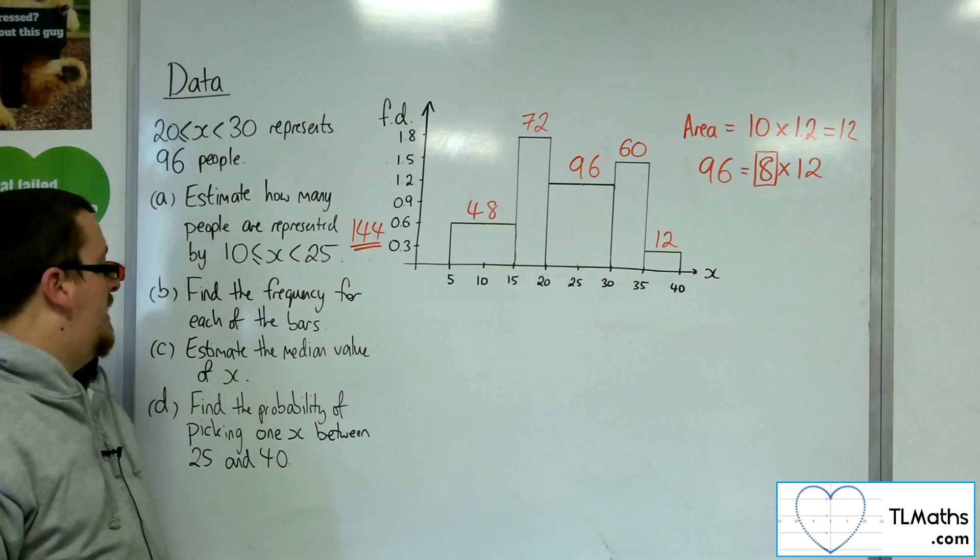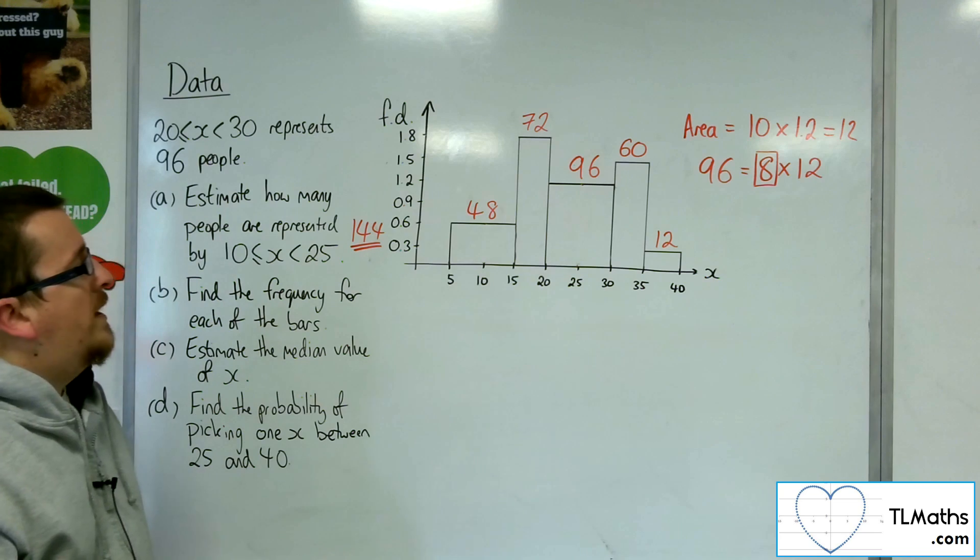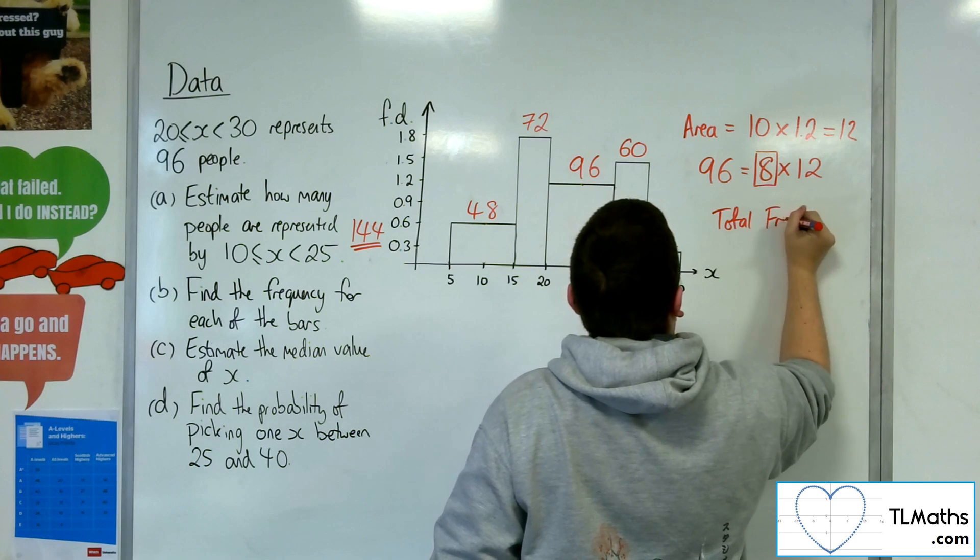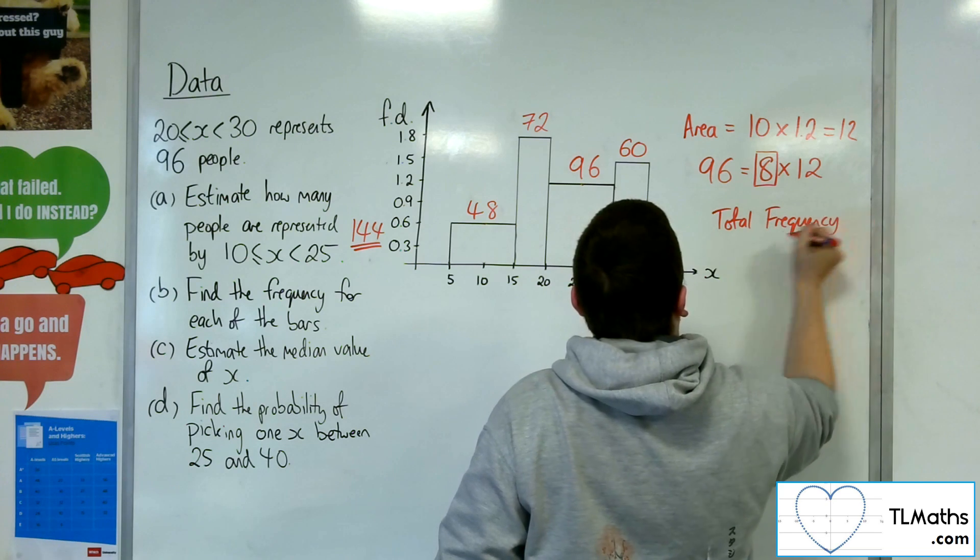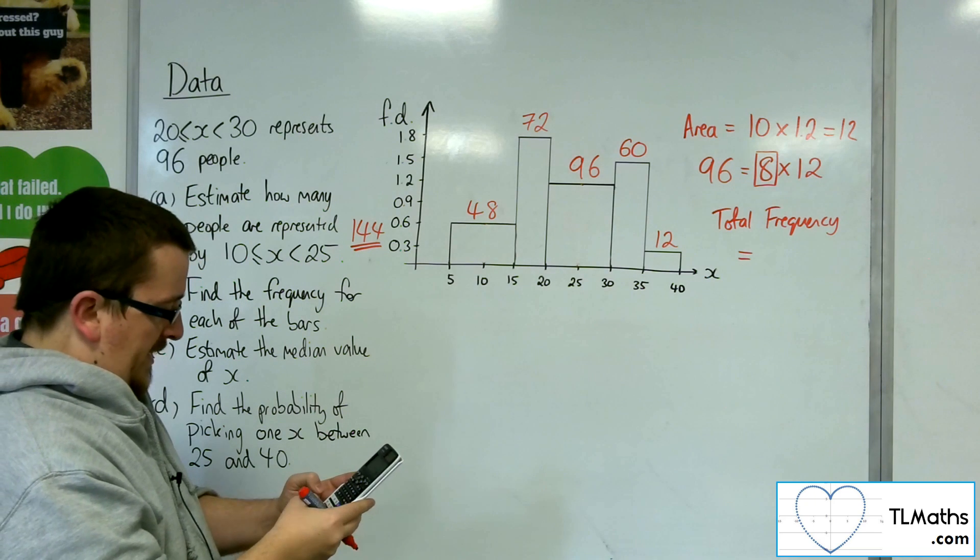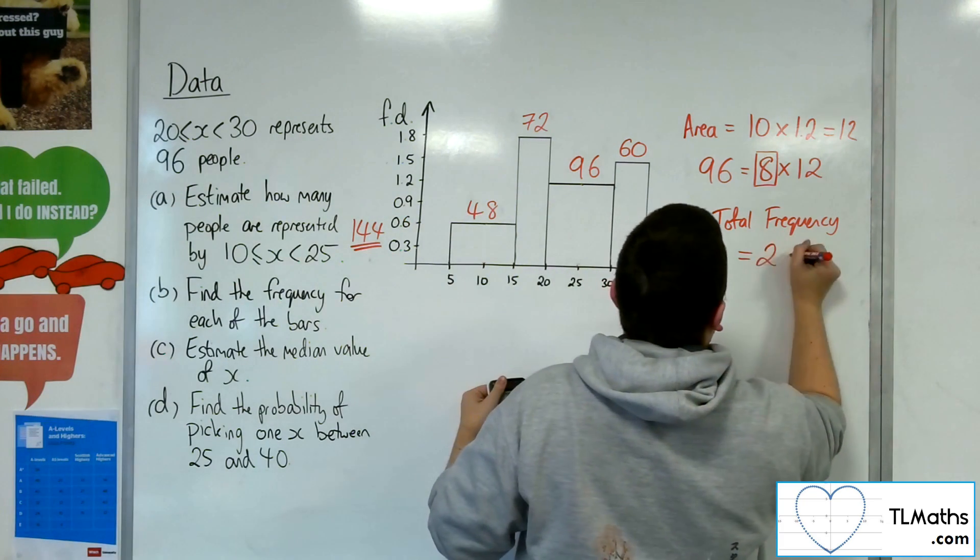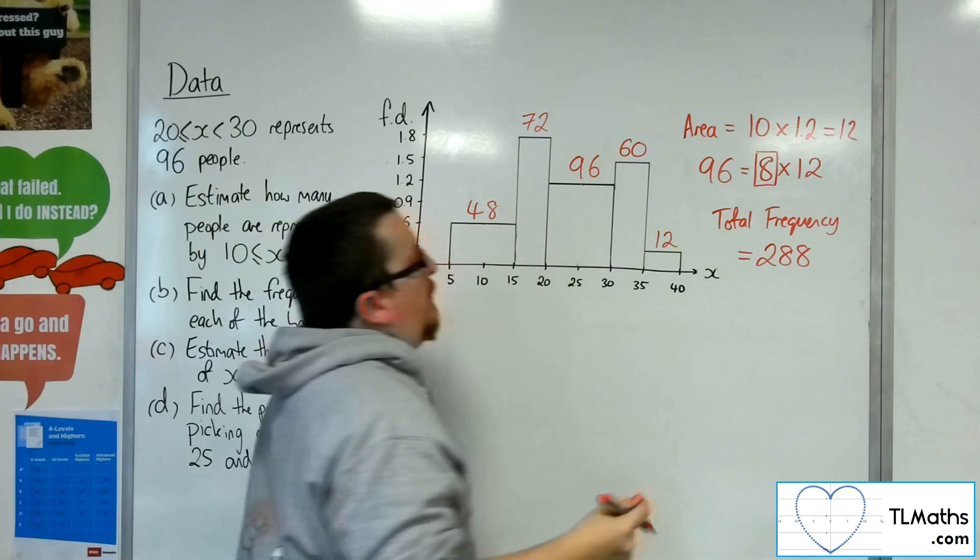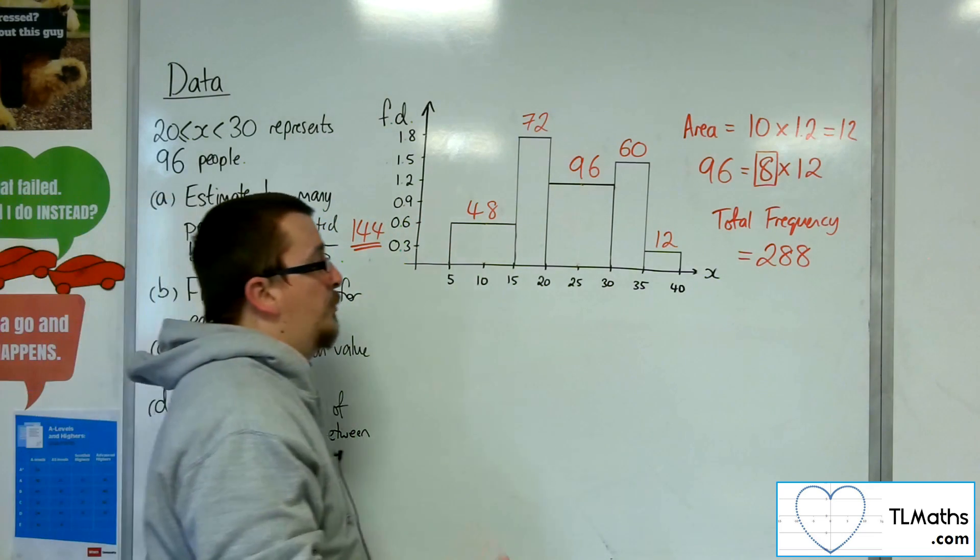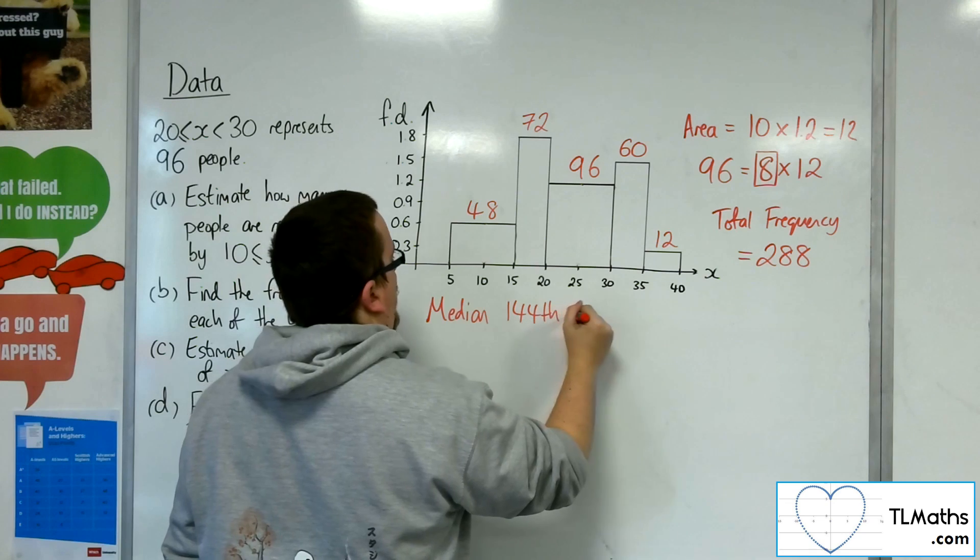Now for C, estimate the median value of X. So the median value, I need to work out what the total frequency is. The total frequency is adding up all of those: 48 plus 72 plus 96 plus 60 plus 12, and that gets me to 288. So because this is continuous data, I'm going to halve that, so 144. So the median will be the 144th value.